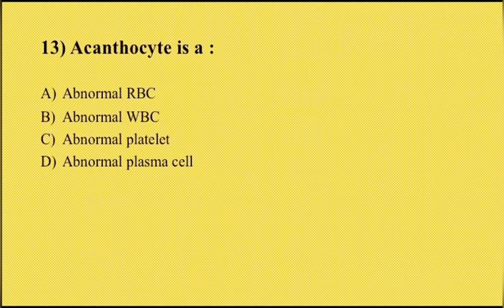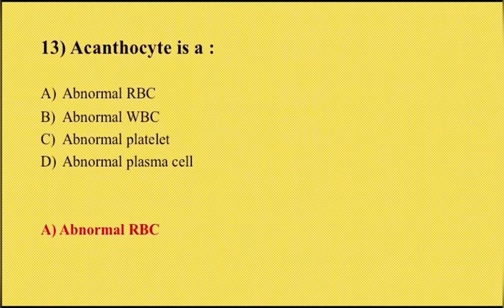Thirteenth question: acanthocyte is option A abnormal RBC, option B abnormal WBC, option C abnormal platelet, option D abnormal plasma cells. The answer is option A, abnormal RBC. Acanthocyte has a spiked cell membrane due to thorny projections.